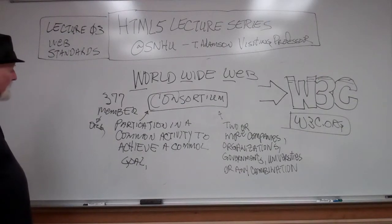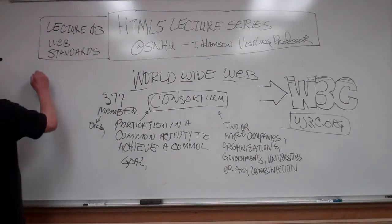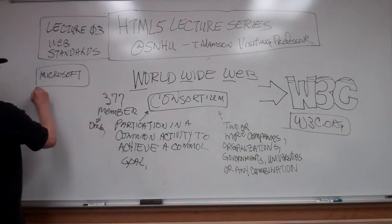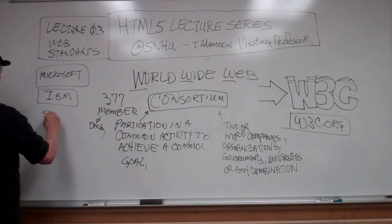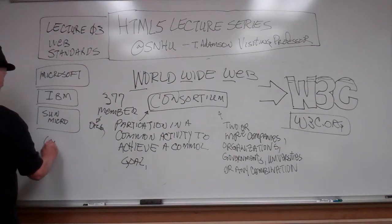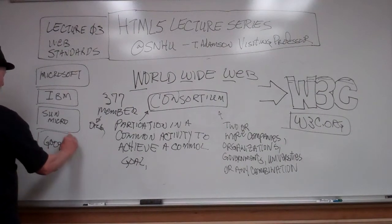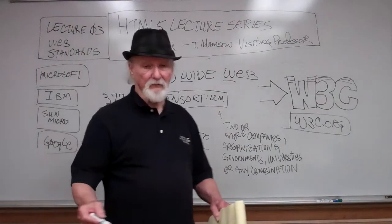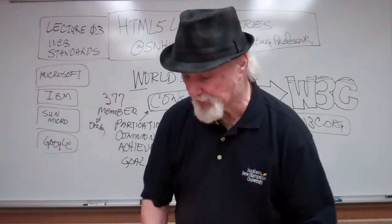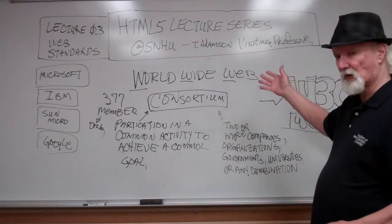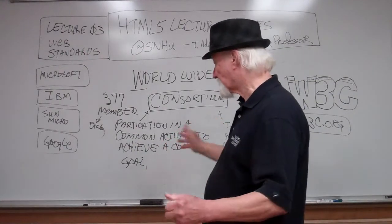These organizations are — you might guess — one of them is Microsoft, another one is IBM, another one is Sun Microsystems, another one is Google, and so on for 377. All of them have an equal vote, and all of them are meeting all the time in order to make what will become recommendations for what the latest web standards should be. Nobody has to follow them — they're simply recommendations.